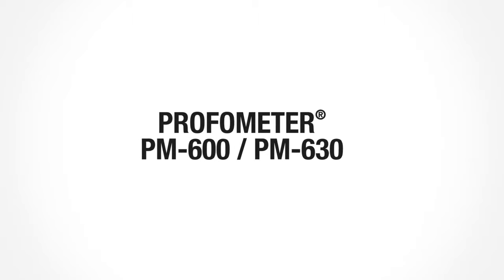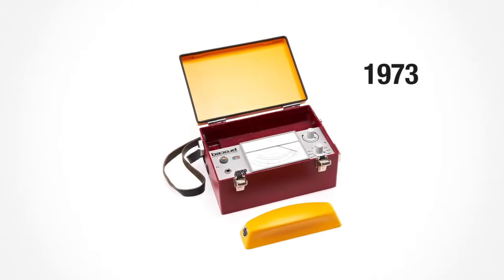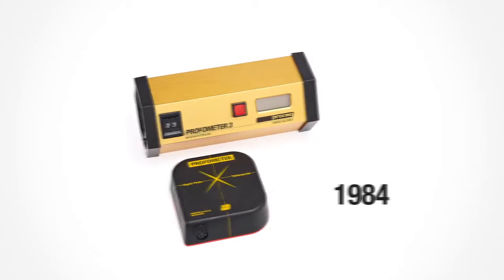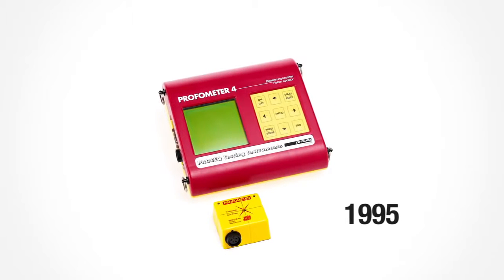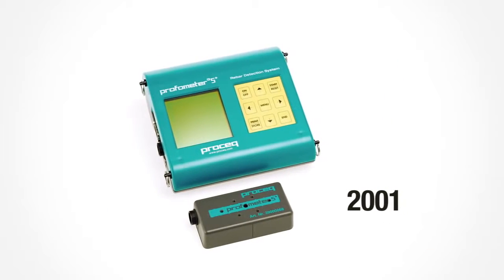ProSec's brand new ProFormator PM600 and PM630 advanced concrete cover meters represent the sixth ProFormator generation, continuing the successful history that began 40 years ago.